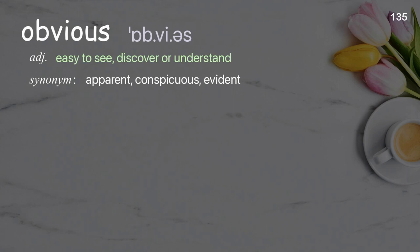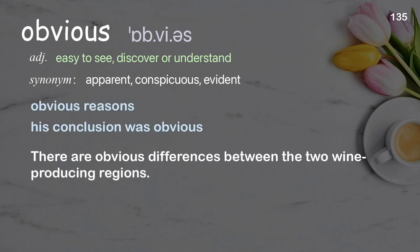Obvious: easy to see, discover, or understand. Examples: obvious reasons; his conclusion was obvious. There are obvious differences between the two wine-producing regions.